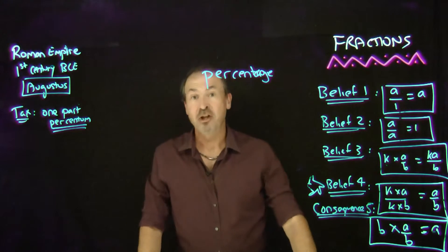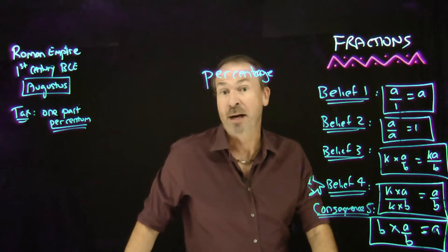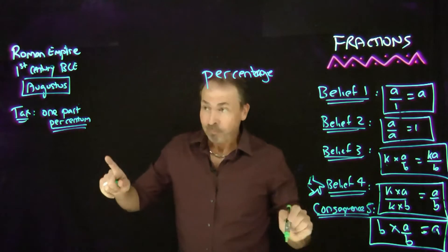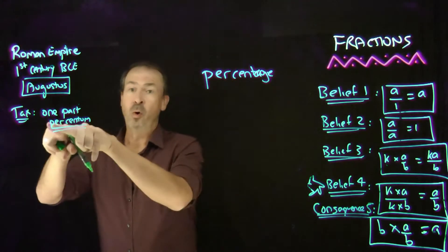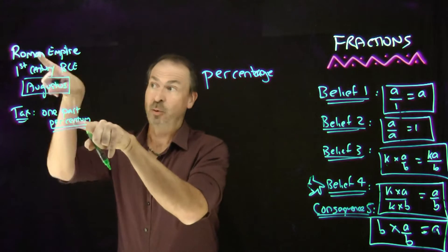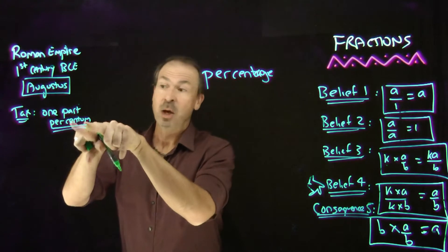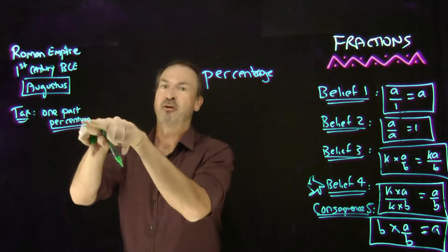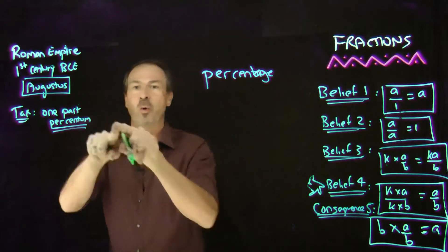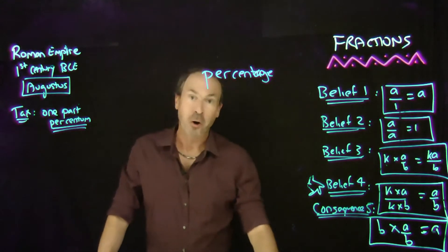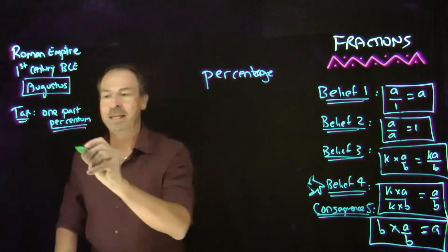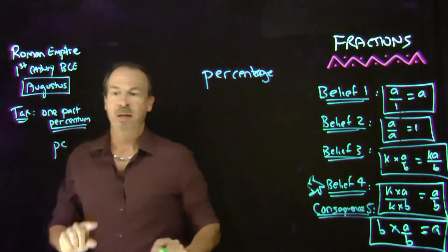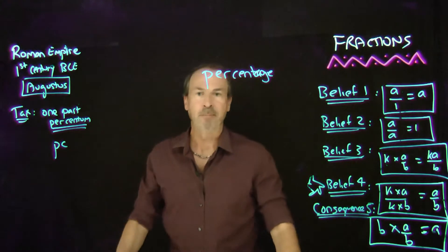So a percentage is simply a fraction out of 100. Now, accountants all through those millennia — 2,000, 2,100 years — were actually writing in their account books per centum, per centum, per centum. They got tired of writing the long words per centum over and over again. They often abbreviated to something like PC or other shorthand.